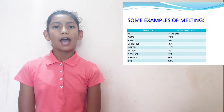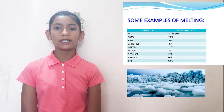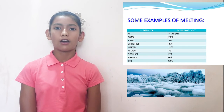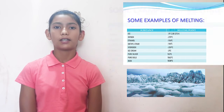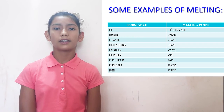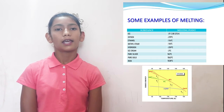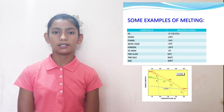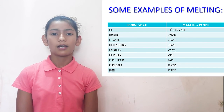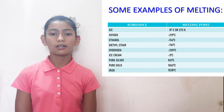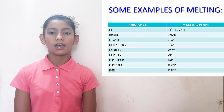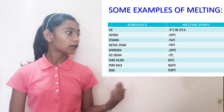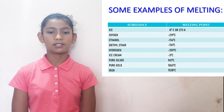Now let's see the examples of melting. Ice melts at 0 degree Celsius or 273 Kelvin. Oxygen melts at minus 219 degree Celsius. Ethanol at minus 114 degree Celsius. Diethyl ether at minus 116 degree Celsius. Hydrogen at minus 259 degree Celsius.